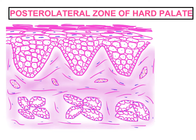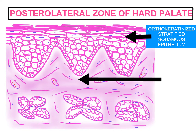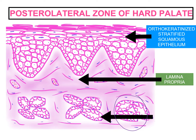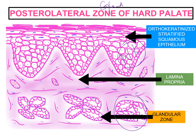In the posterolateral zone of the hard palate, again we have orthokeratinized stratified squamous epithelium, lamina propria, and salivary glands in the submucosa — that is why it is also called the glandular zone. In the epithelium we can also see non-keratinocyte cells like melanocytes and Langerhans cells, as seen in gingiva. The lamina propria is thicker in the anterior region than in the posterior region.